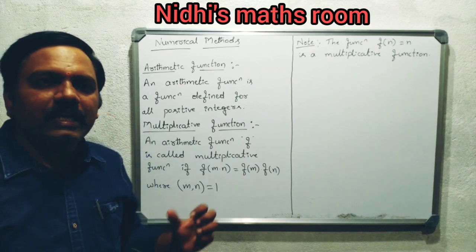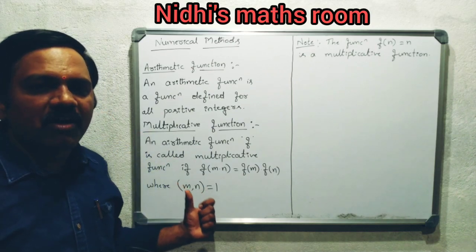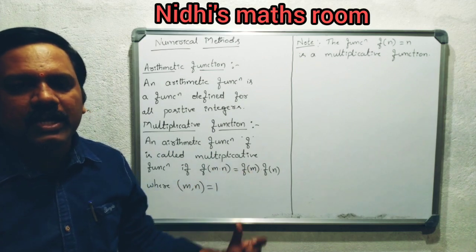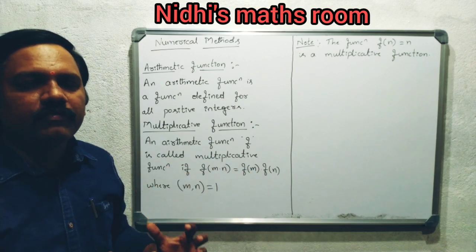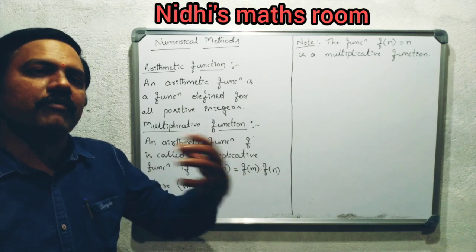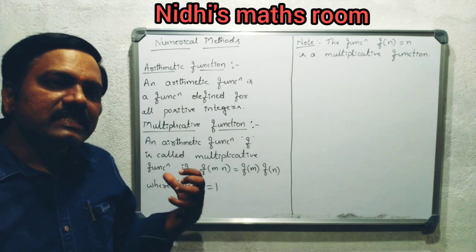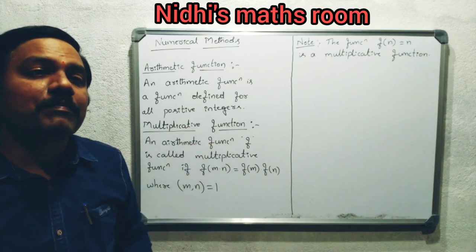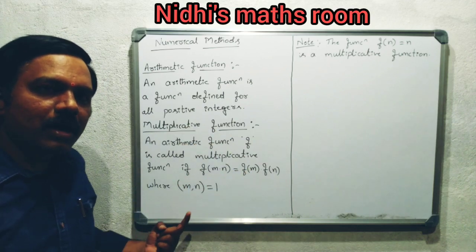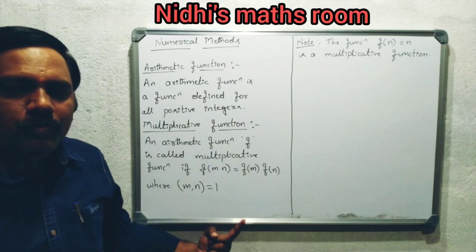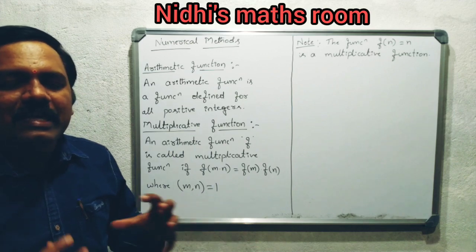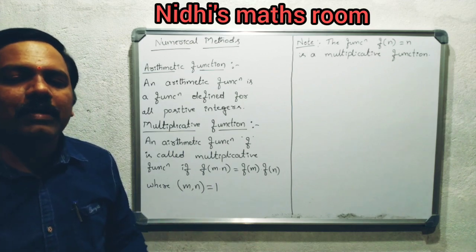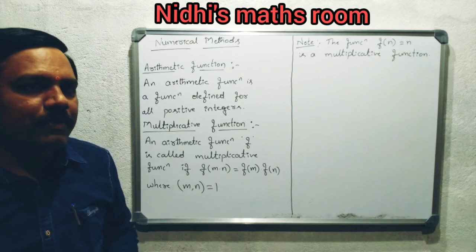f of m·n is equal to f of m into f of n, where m and n are relatively prime. That is, gcd(m, n) is equal to 1 means m and n are relatively prime.